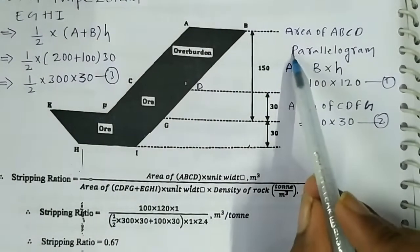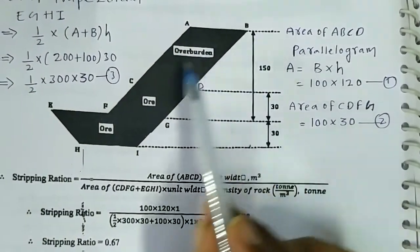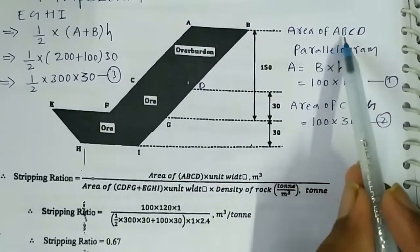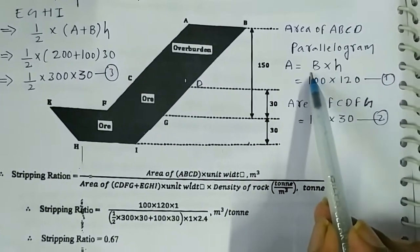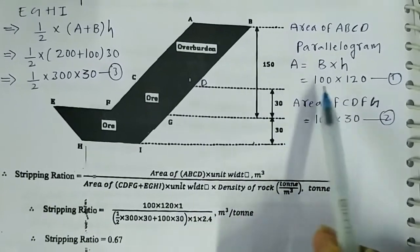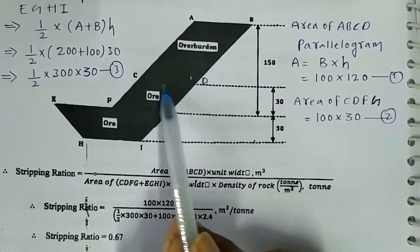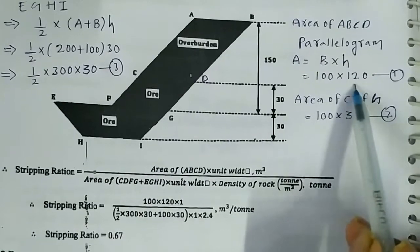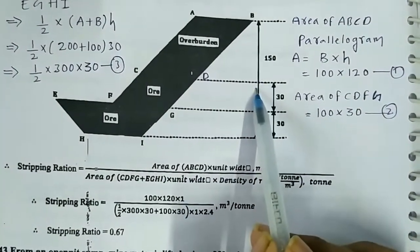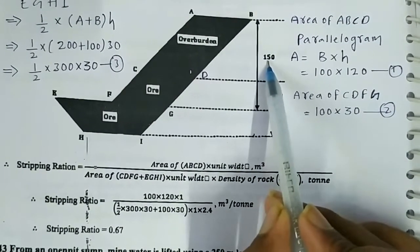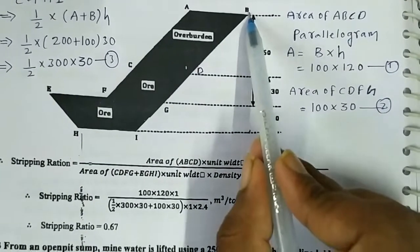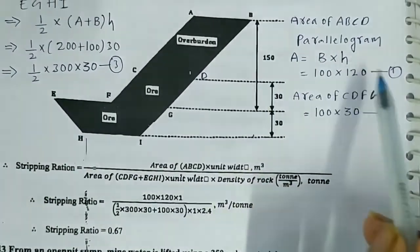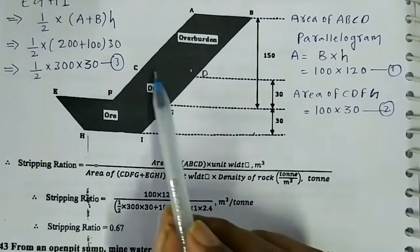In this figure we get ABCD. Area of ABCD is the parallelogram, so area equals base into height. Here the base is 100 meters into height. The 150 meters is subtracted with 30, so we get 120. Height is 120. This is the first equation.